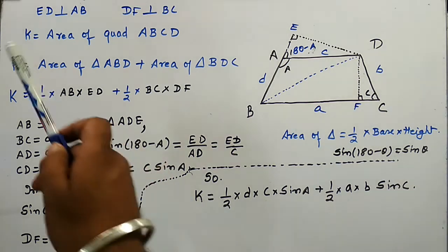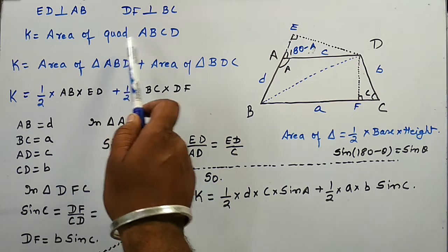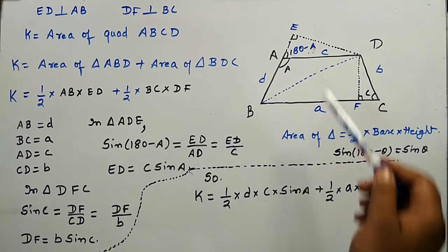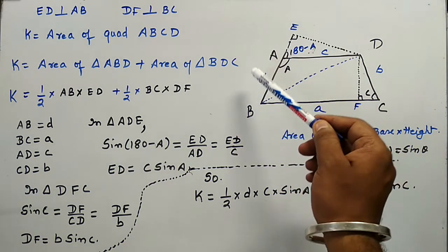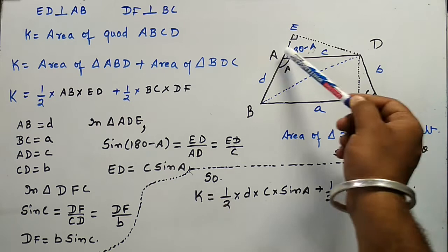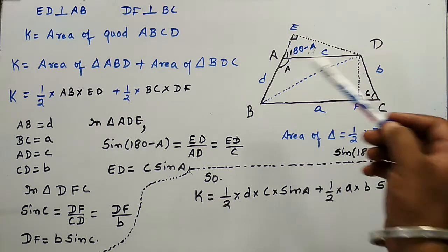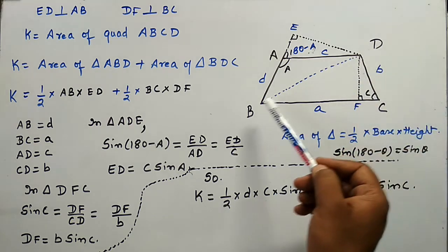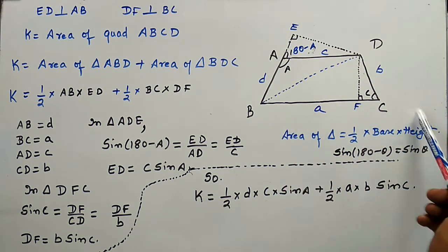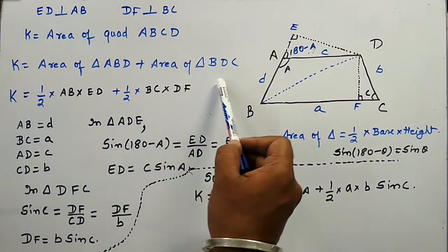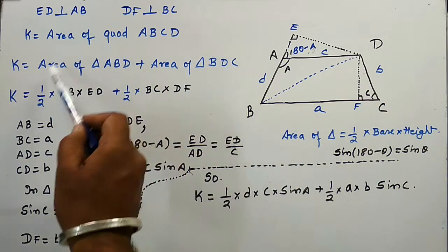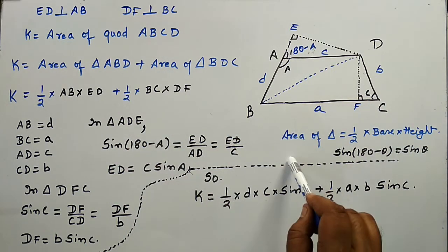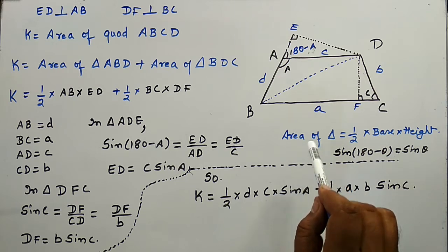The area of quadrilateral ABCD we are representing by K. The area of this quadrilateral will be equal to the area of triangle ABD plus the area of triangle BDC. The area of triangle ABD would be equal to half into base into height, which is the formula for calculating the area of a triangle.